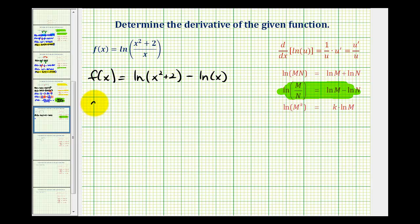So f prime of x will be equal to the derivative of natural log x squared plus two minus the derivative of natural log x.